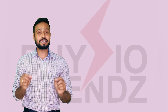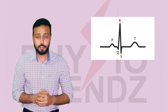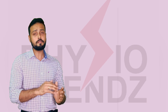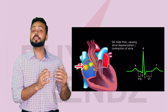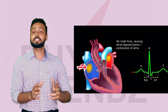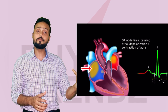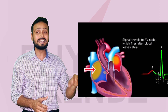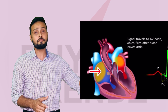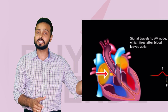Now you are ready to understand what the PQRST waves in the ECG waveform mean. Let's start with the P-wave. The P-wave signifies atrial depolarization. Depolarization means the emptying of the chamber, so whenever the atrium is getting emptied, it is represented by the P-wave. The P-wave is the indicator of atrial depolarization.